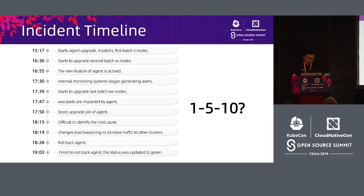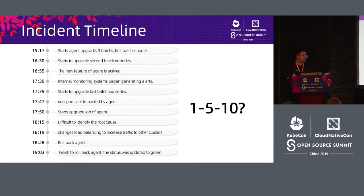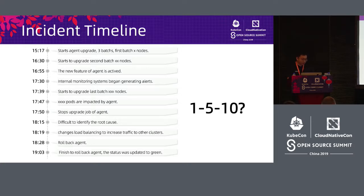As infrastructure, any operation needs to be quite cautious because small problems in the underlying infrastructure might trigger significant problems at the top level. In our infrastructure team, stability is a very important element — your performance and business value are secondary if you don't have the foundation of stability. This is a typical problem caused by a release where we didn't achieve the goal of 1, 5, and 10 — it happened at 3:17 PM and was only solved at 7 PM.